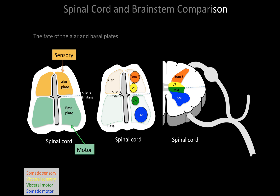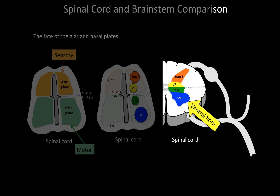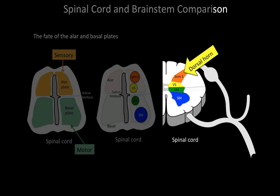In the adult spinal cord, these three pictures show the same section morphing over time as the neural tube develops. In the adult spinal cord we see the ventral horn made up of somatic motor neurons, the lateral horn made of visceral motor neurons — sympathetics at T1 to L2 levels — and the dorsal horn showing sensation.